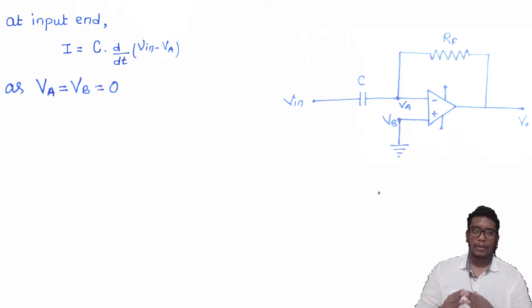the value of voltage at point VA and VB will be zero. So the expression will become I is equals to C into d/dt of VIN, because VA is zero. Now, we put this equation as equation number one.